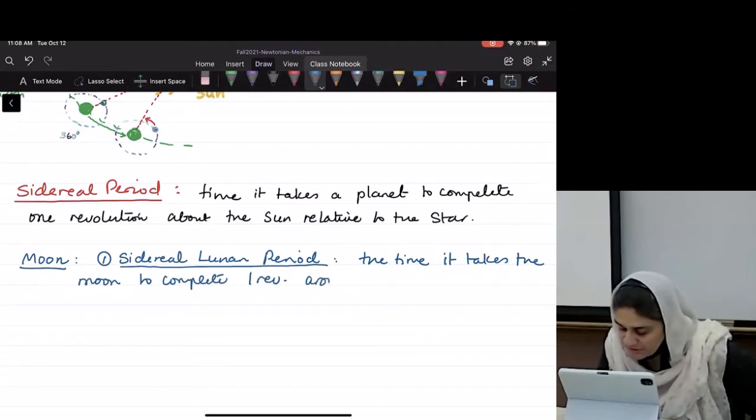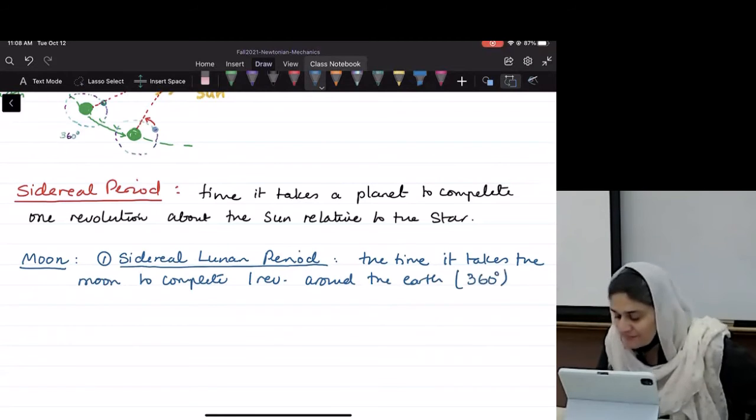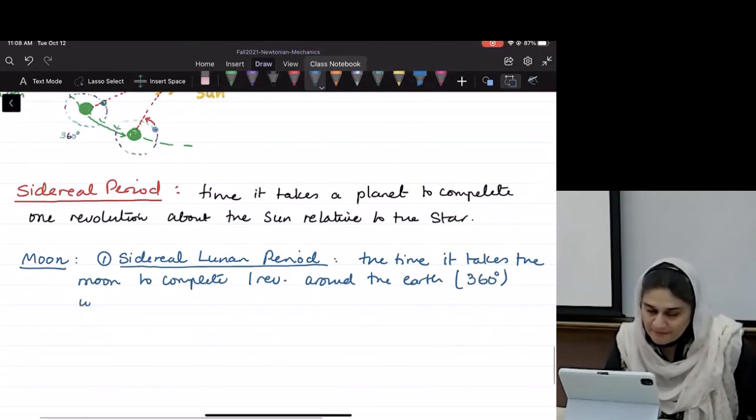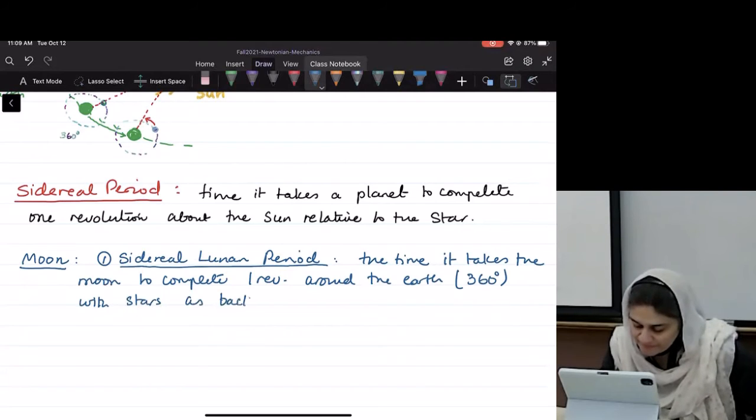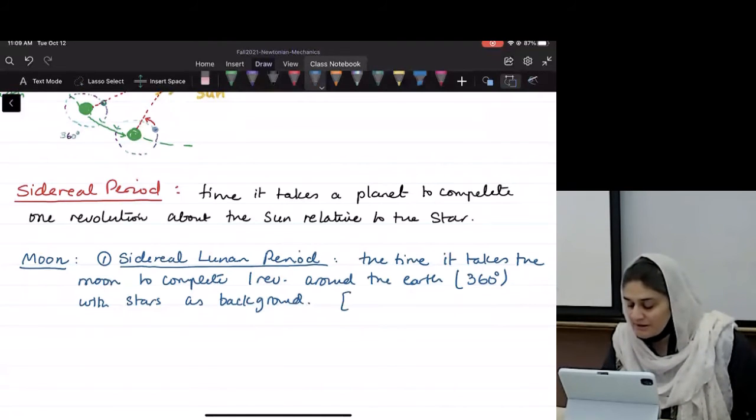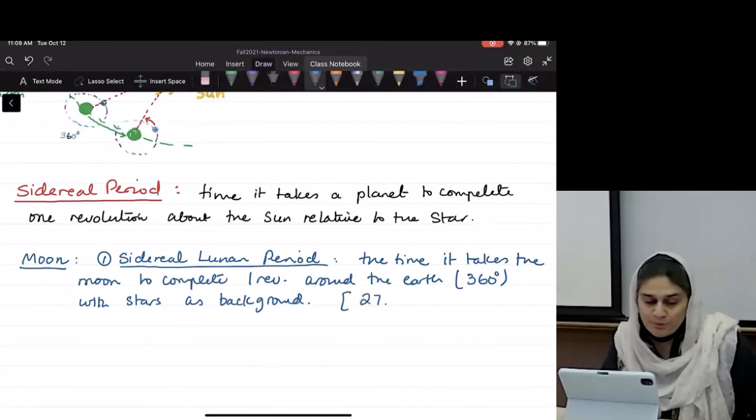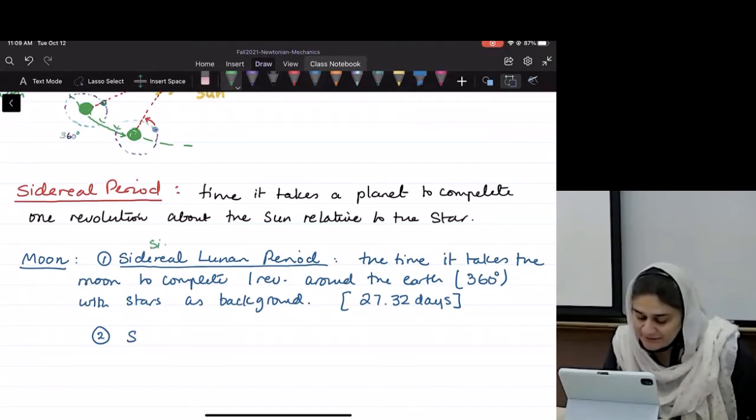Which is how many degrees? 360 degrees. With stars as background. And the period is 27.32 days. It's also called the sidereal month.